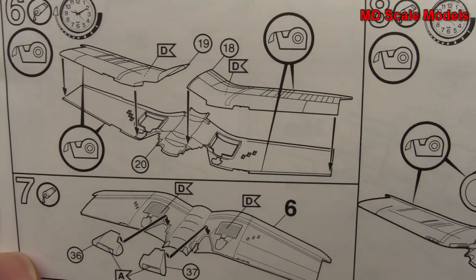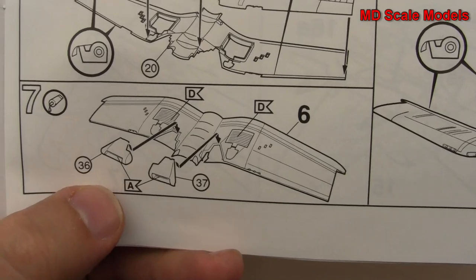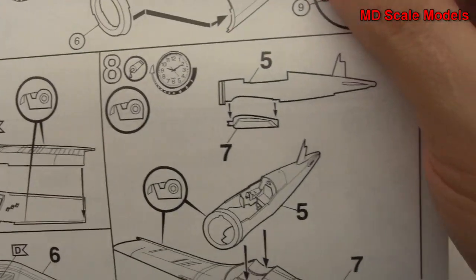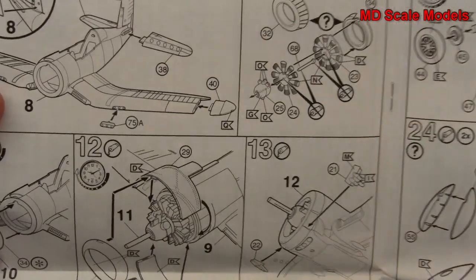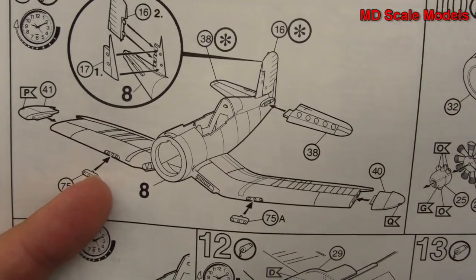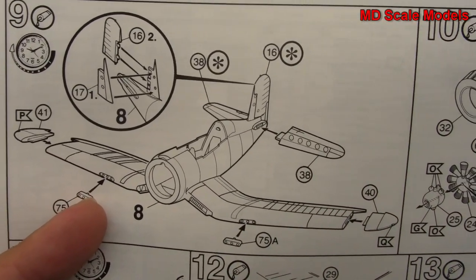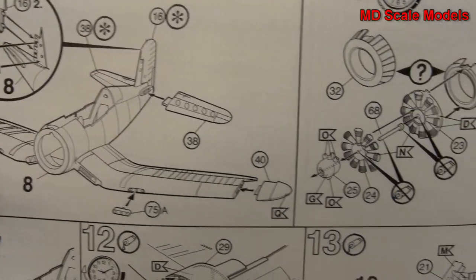Our wings start to get put together here as well as the radiators. And the wings are mounted to the fuselage. The tips of the wings go on as well as our rudder and our elevator.